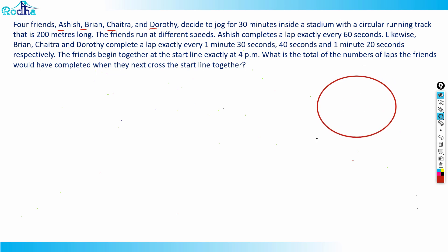The friends run at different speeds. Ashish completes a lap exactly every 60 seconds. B, C, and D complete a lap exactly every 1 minute 30 seconds, 40 seconds, and 1 minute 20 seconds respectively. So A takes 60 seconds, B takes 90 seconds, C takes 40 seconds, and D takes 80 seconds.